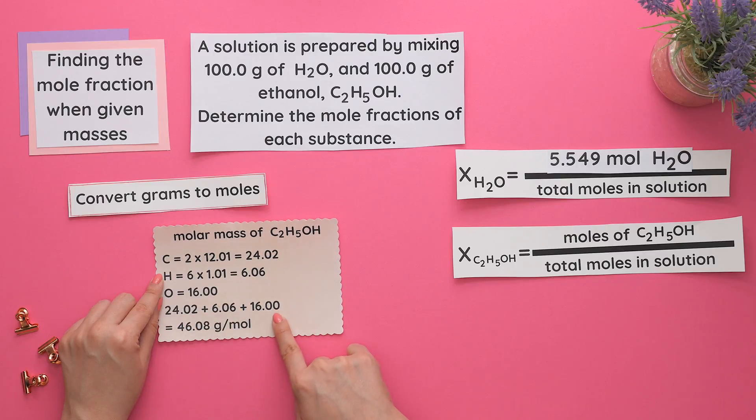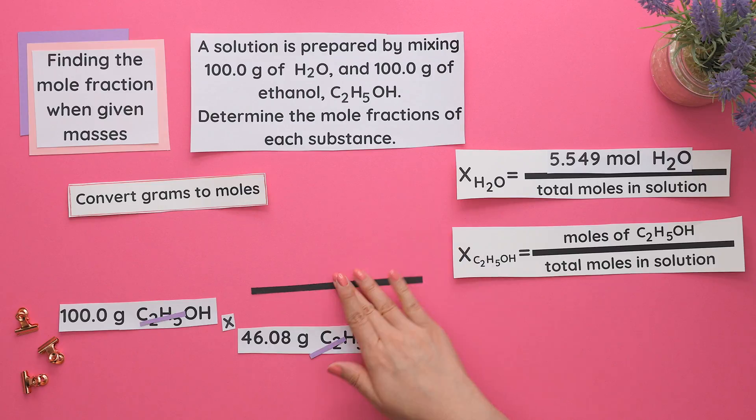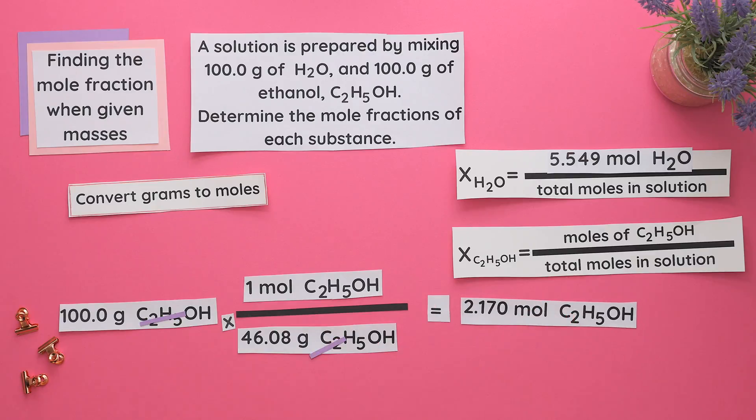Add all these up to get the molar mass of ethanol, which is 46.08 grams per mole. We'll place the grams of ethanol on the bottom so grams cancel, and one mole of ethanol is left on top. These are our moles of ethanol.